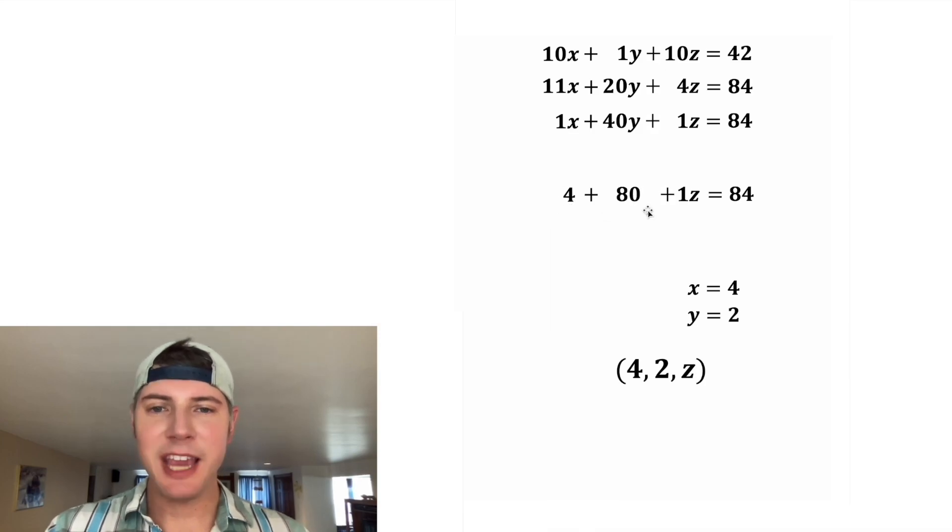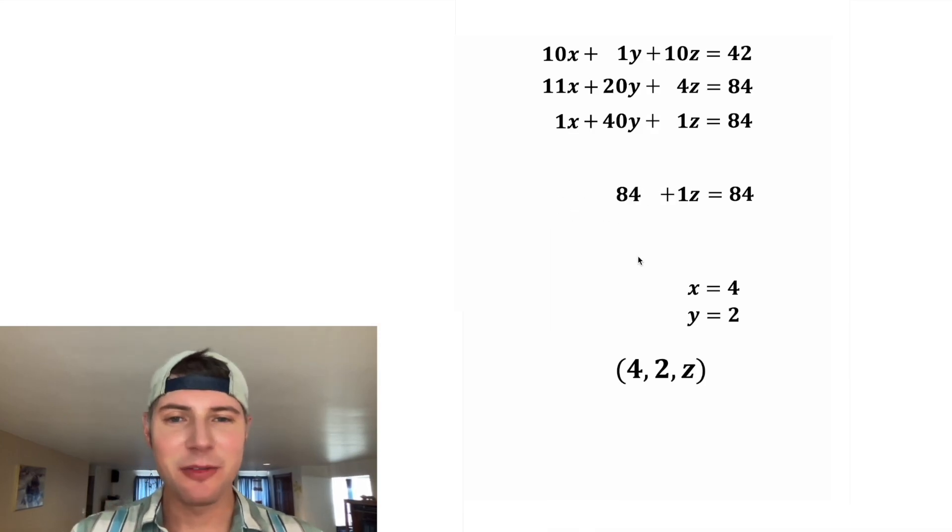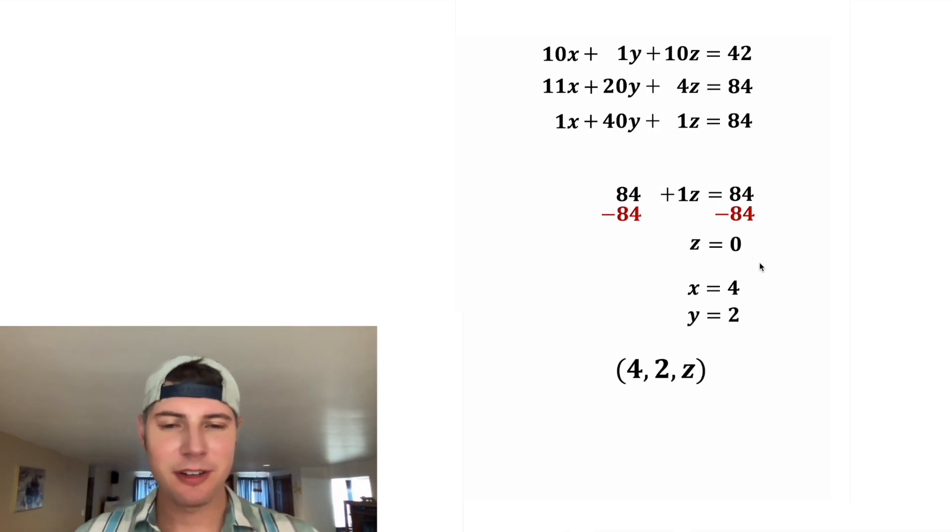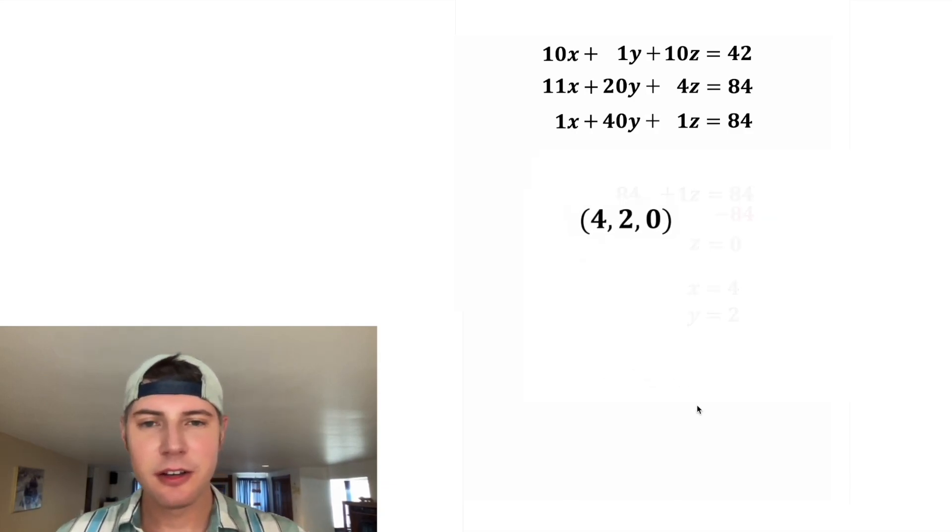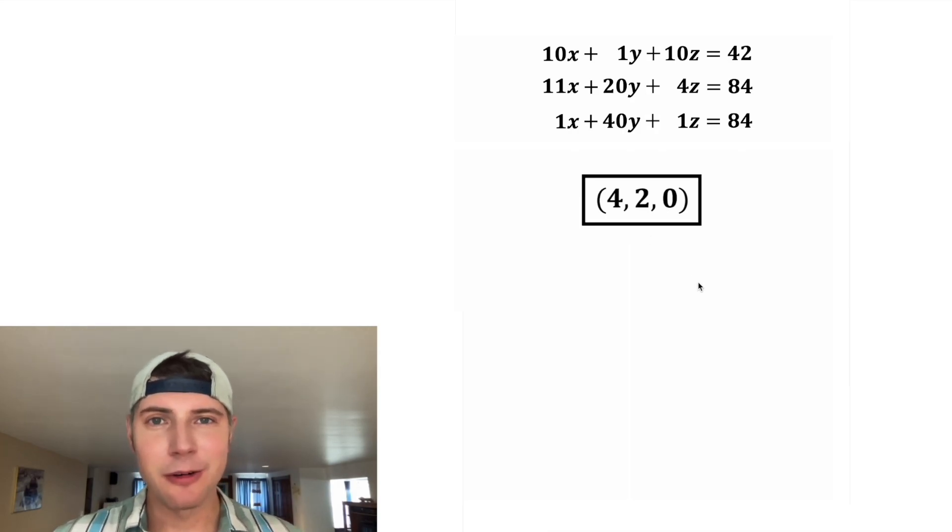1 times 4 is 4, 80. 4 plus 80 is 84. And then we can subtract 84 from both sides. We're going to have z on the left-hand side, and 84 minus 84 is 0. So we have z equals 0. So we can update the z equals 0 here. So this is the solution set to x, y, and z that satisfies this system of equations. Let's put a box around it. How exciting.